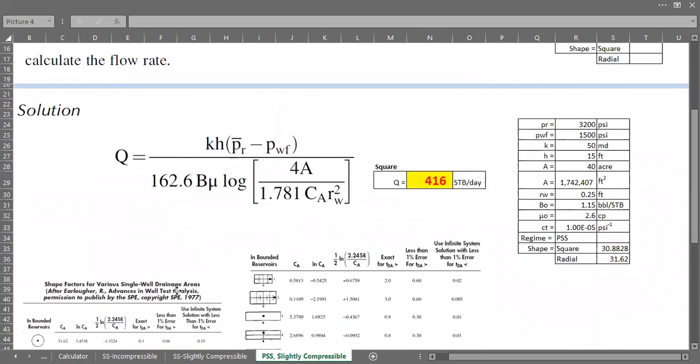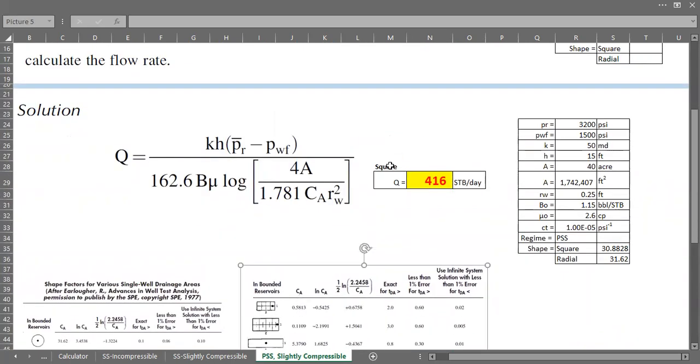So it's the same, square drilling pattern or square drainage shape. But if we maintain all the parameters and assume that the shape is radial, like this radial, and then I want to copy.